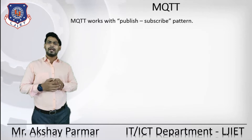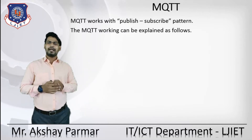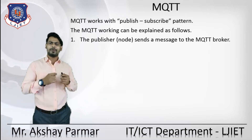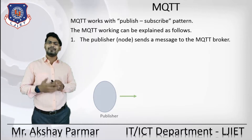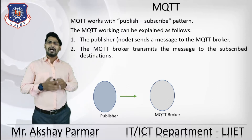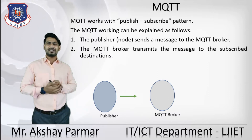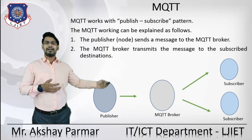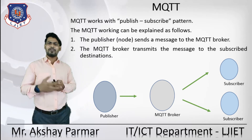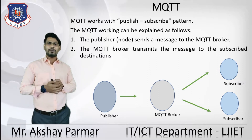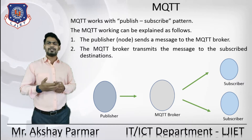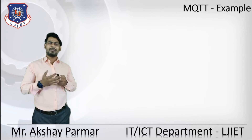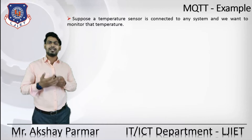MQTT works in a publish-and-subscribe pattern. The publisher node sends the message to the MQTT broker. The MQTT broker receives that message from the publisher and then transmits it to the subscriber destination. The subscribers get their information from the MQTT broker — not directly from the publisher. They need a mediator, which is the MQTT broker. So the publisher sends data to the broker, and the broker transmits it to the end destination.